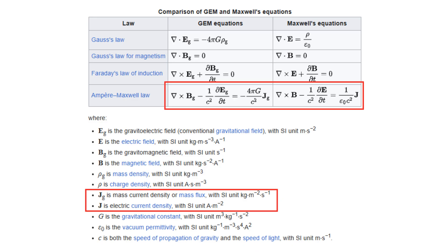Thus, parallel mass currents repel gravitomagnetically, while antiparallel mass currents attract gravitomagnetically.